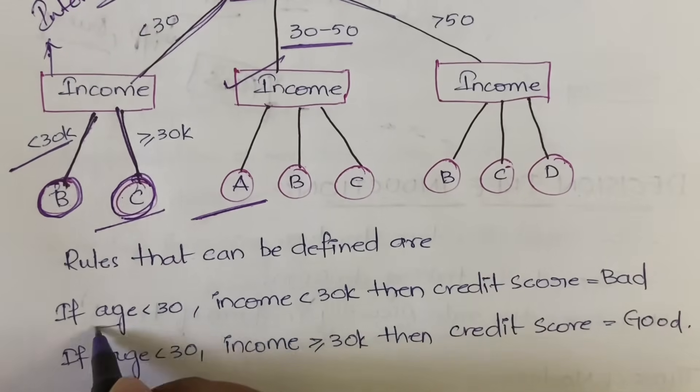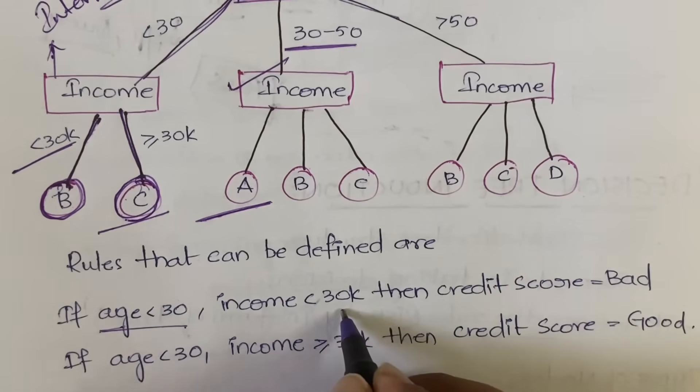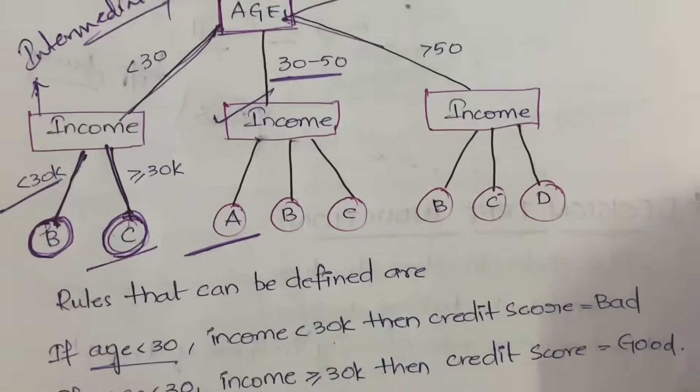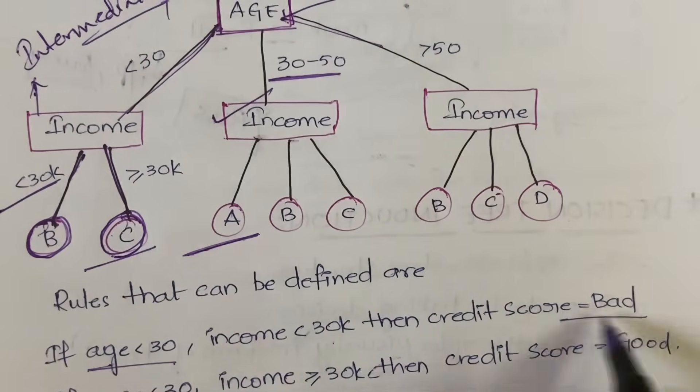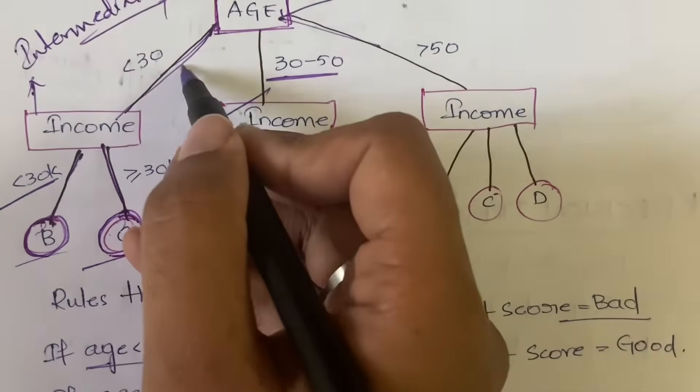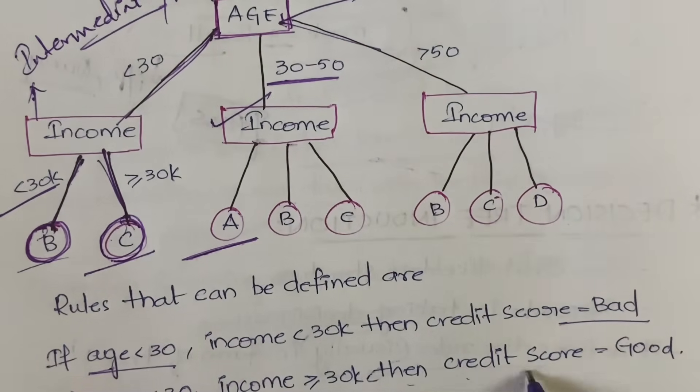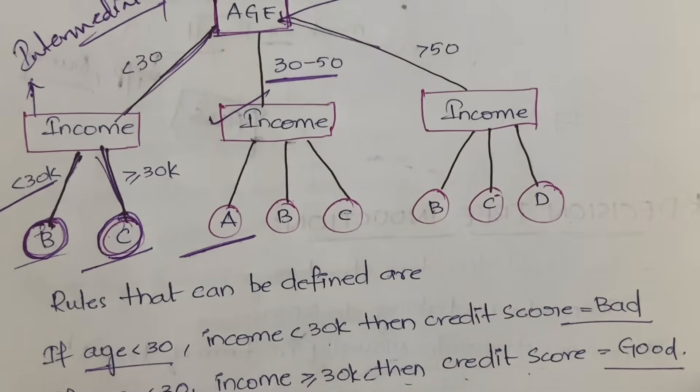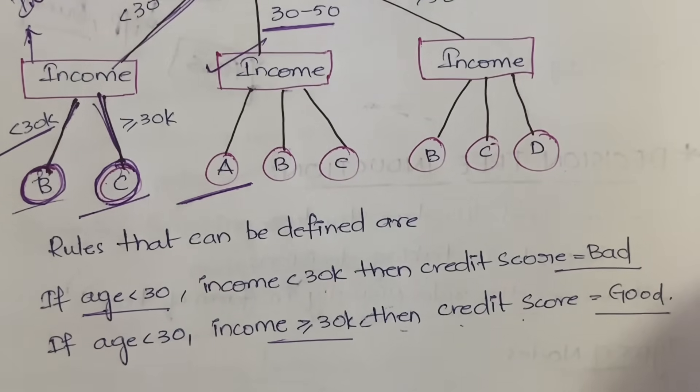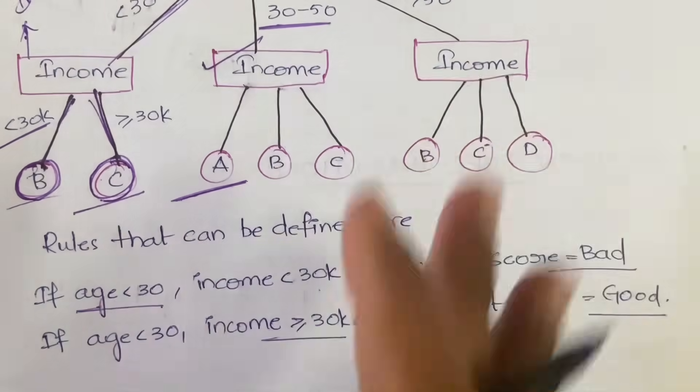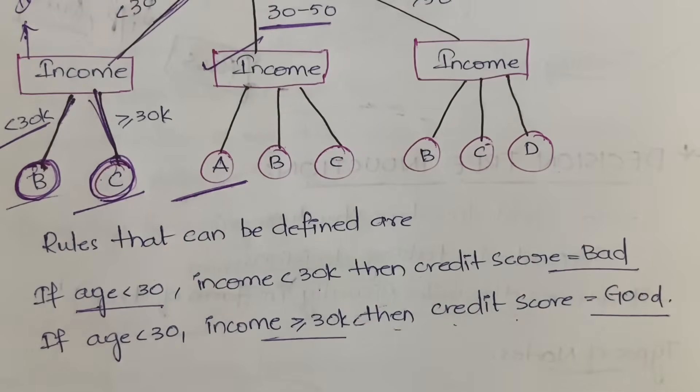From this decision tree what are the rules that you can generate? If age is less than 30 and income is less than 30k, then the credit score is bad B. If age is less than 30 and income is greater than or equal to 30k, then the credit score is good. So based on the decision tree you are getting the rules, or based on the rules given to you you can construct a decision tree. This is how decision tree helps you make quick decisions.